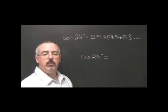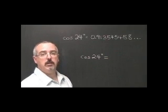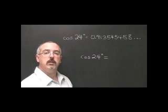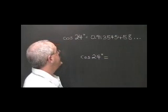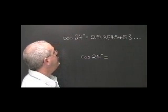Remember that in trigonometry, we round off our answers to four decimal places. If we enter cos of 24 degrees into our calculator, we get a long decimal that starts with 0.91354.